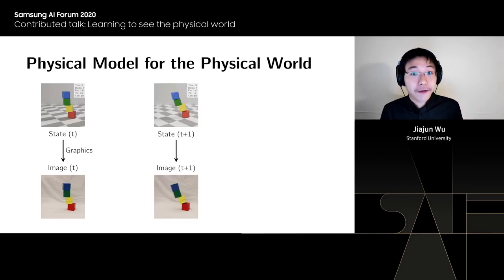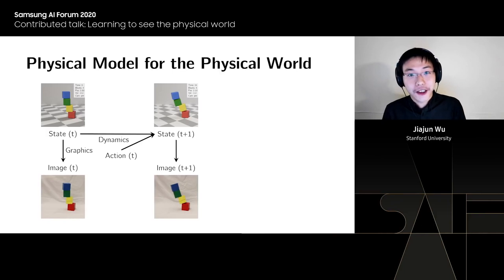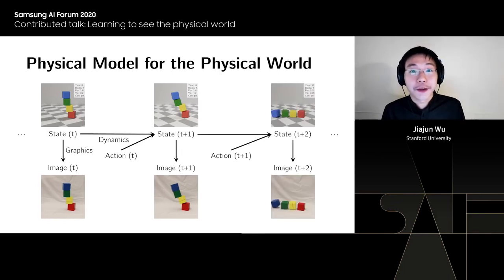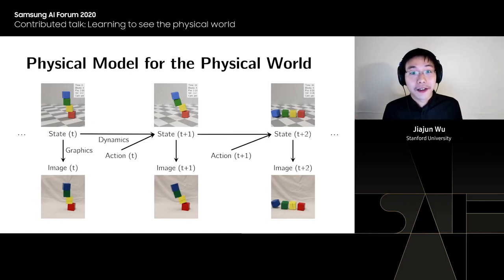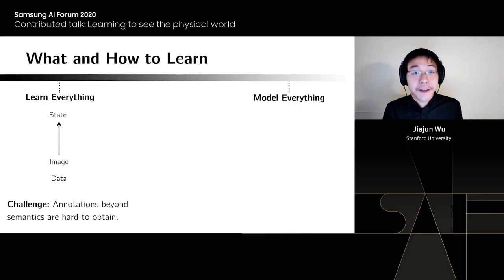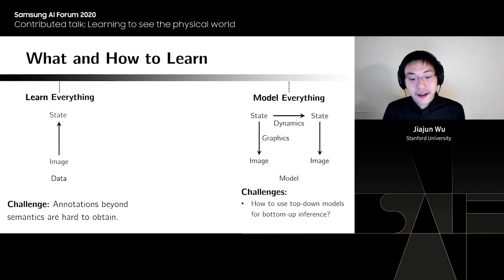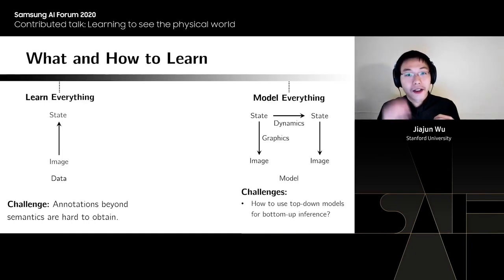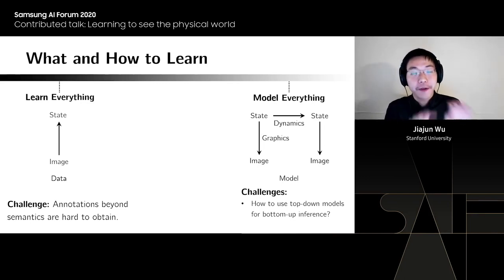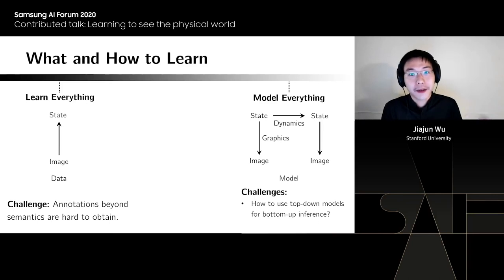Beyond a single frame, we can extend this across multiple frames — there are dynamics. Conditioned on the current state and on actions, we predict what happens in the future. For example, in a video, the action could be gravity. However, this modeling approach has challenges. The biggest challenge is inverting the model: once we understand object geometry and physics top-down, doing the bottom-up inference is very hard. Traditional approaches like MCMC sampling are too slow to be practically useful.